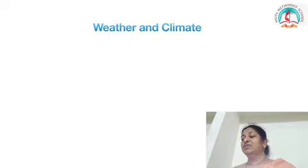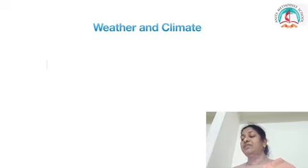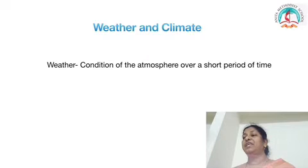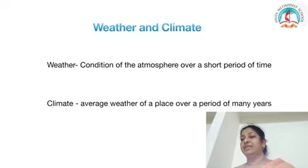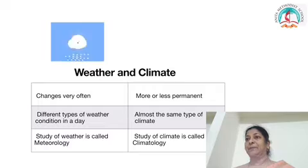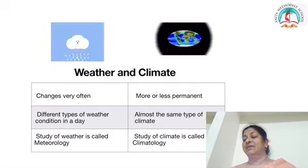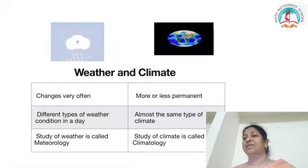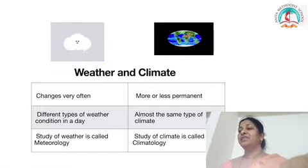Now we are going to see about weather and climate — the two terms related to atmospheric conditions. One is weather and the other is climate. Weather is the condition of the atmosphere over a short period of time, whereas climate is the average weather of a place over a period of many years. Weather changes very often, while climate is more or less permanent.